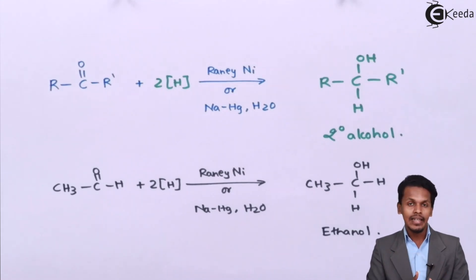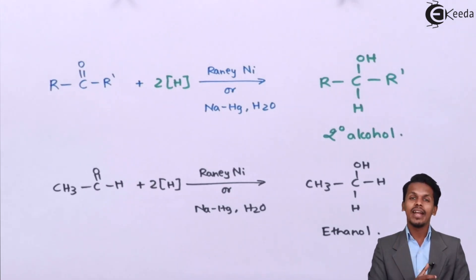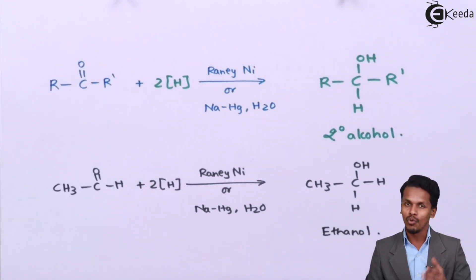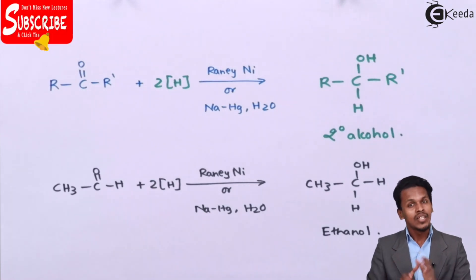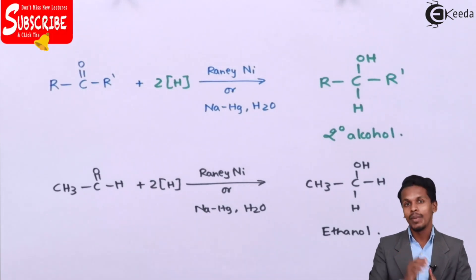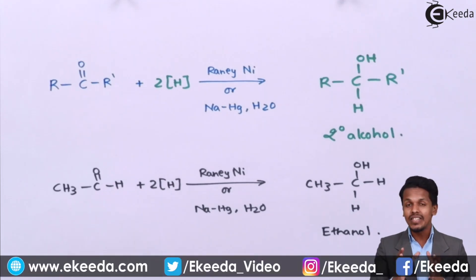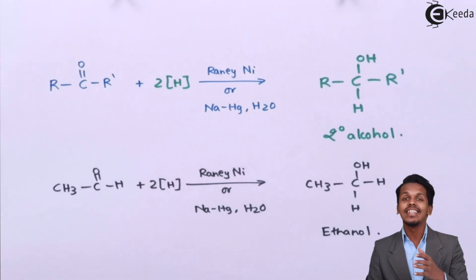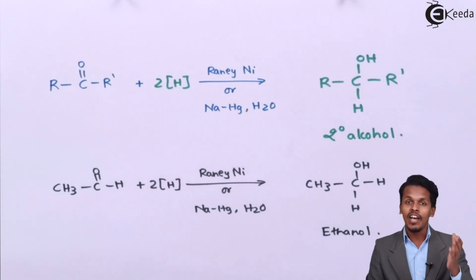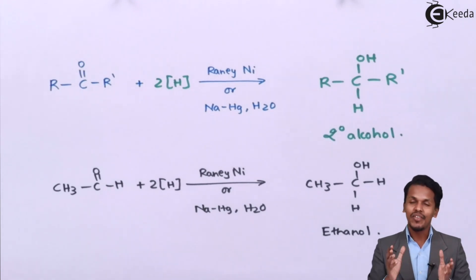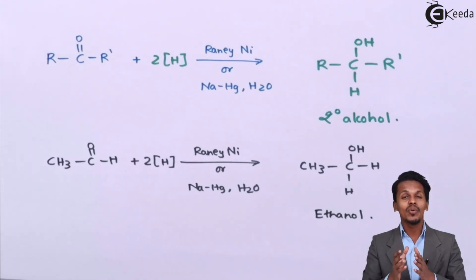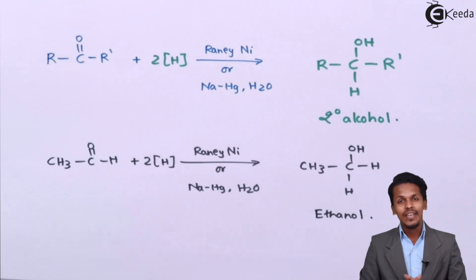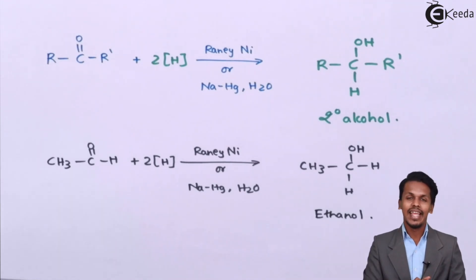Talking about other reagents like lithium aluminum hydride and sodium borohydride: lithium aluminum hydride is actually very expensive compared to sodium borohydride. However, if we have to prepare an unsaturated alcohol, we use lithium aluminum hydride because LiAlH4 specifically only reduces the C=O and will not reduce the C=C double bond. So if we have an unsaturated aldehyde, LiAlH4 allows us to obtain an unsaturated alcohol.